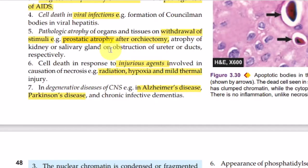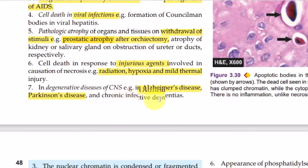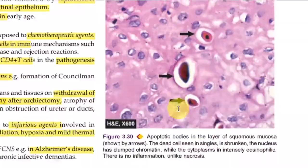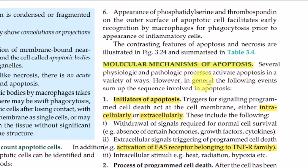After orchidectomy, the prostate receives dihydrotestosterone signals for survival, but when orchidectomy is performed, testosterone is removed and the prostate gland also goes into the stage of apoptosis. Pathologically, radiation in radiotherapy, hypoxia, and thermal injuries also cause apoptosis. In Alzheimer's disease and Parkinson's disease, as the aging process progresses our neurons also go into apoptosis. In myocardial infarction, it is a combination of apoptosis and necrosis — approximately 20% necrosis and 80% apoptosis.